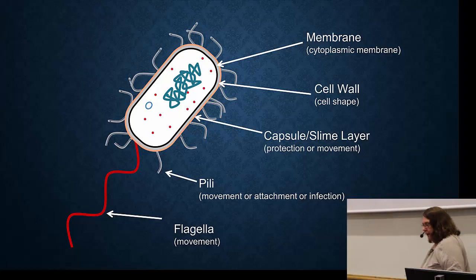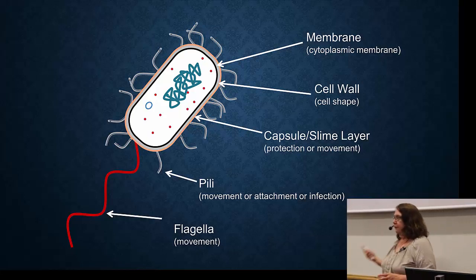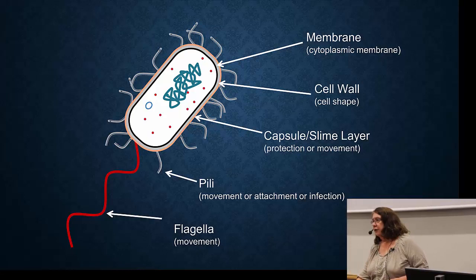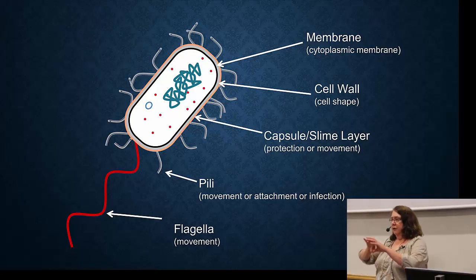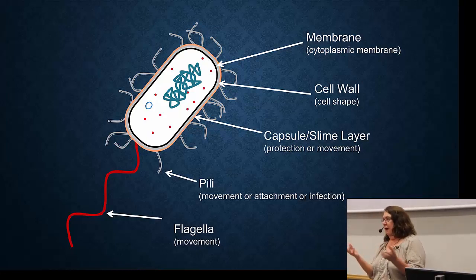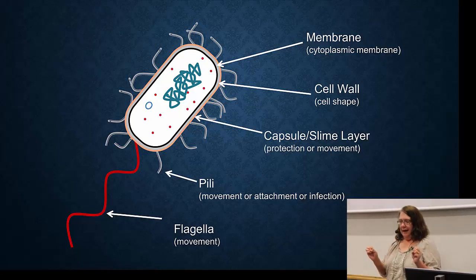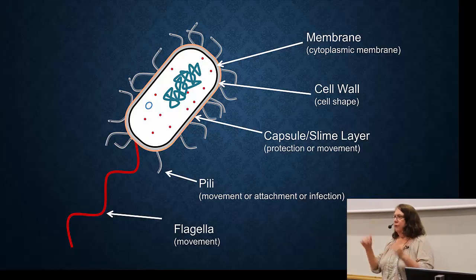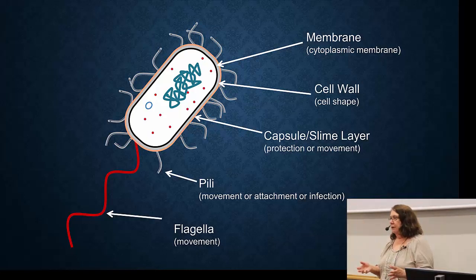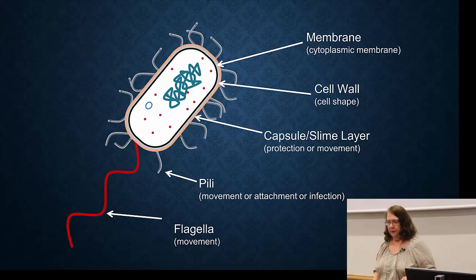The capsule and slime layer serve two functions. One is protection. It's called slime because it's slimy — very viscous. You can imagine some molecules can't penetrate the slime, so that's a layer of protection against a number of different chemicals.